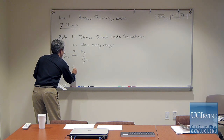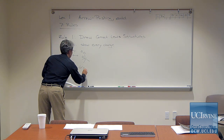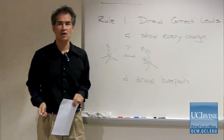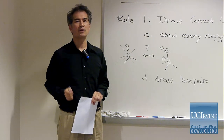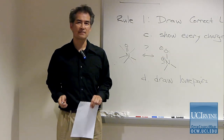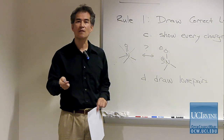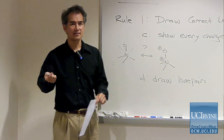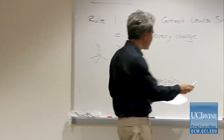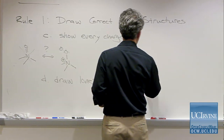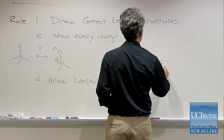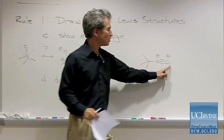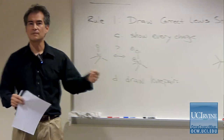The last part of rule one is to draw every lone pair of electrons. 95% of every organic reaction mechanism starts with an arrow coming from a lone pair. If you don't draw them, you may forget that those things are important. For example, in T-butyl isonitrile, if I don't remember to draw that lone pair on carbon, I may miss that that's the nucleophilic end of the molecule.